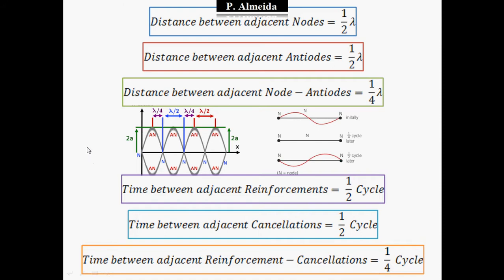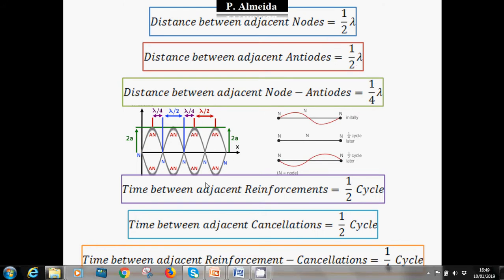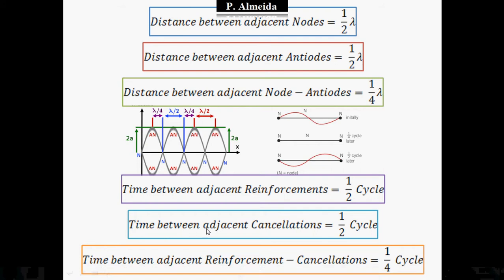Remember that a full cycle is a full wavelength. The time between adjacent reinforcements where I have antinodes will be half of a cycle, because the distance is half of a wavelength. The time between adjacent cancellations — between adjacent nodes — is going to be half of a cycle as well, since it's half of a wavelength in between.